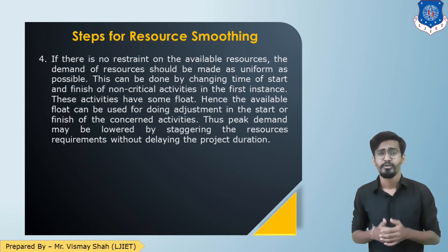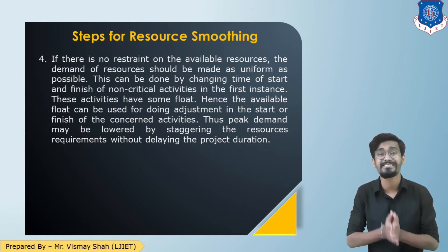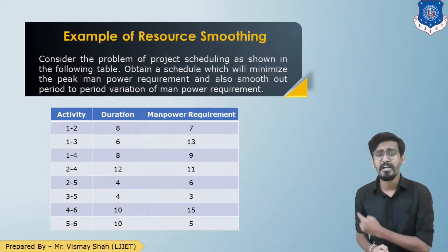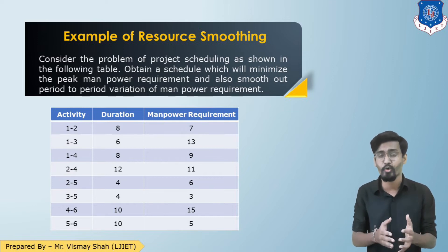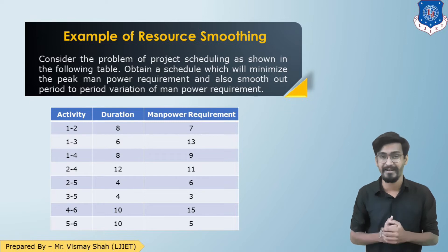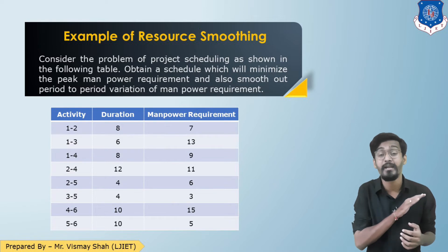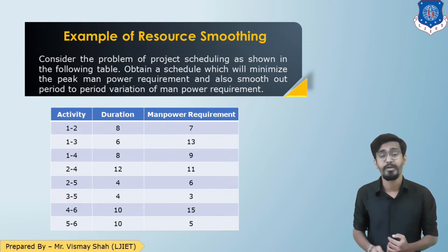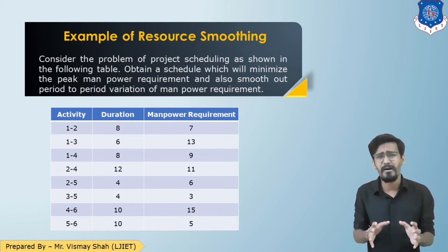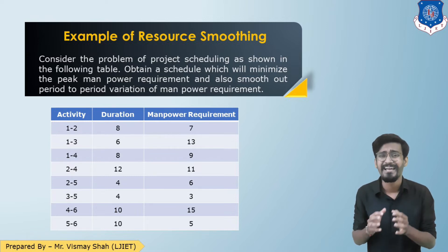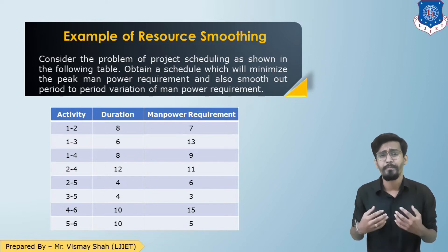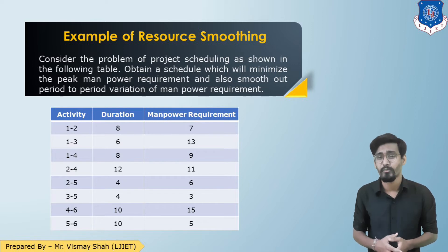Now let us understand a numerical for resource smoothing. A table is given for a construction project having activity duration and manpower requirements. We need to prepare a project schedule that will minimize the peak requirements and smooth out the resources. We need to determine the total resources each activity requires and also determine the float. To prepare the float, the very first step is to draw the network.